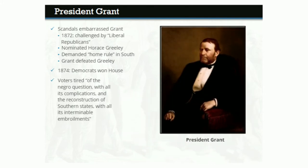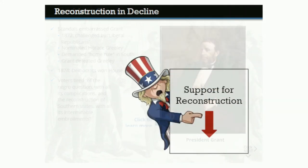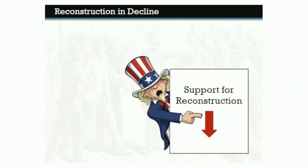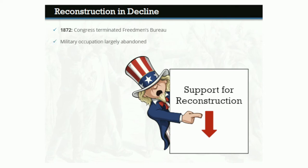Reconstruction had become unpopular, and so it seemed had Grant's Republican Party. Support for Reconstruction continued to decline. By the 1870s, the Freedmen's Bureau had lost most of its funding and staff, and in 1872 Congress terminated the agency for good. Military occupation was also largely abandoned. After the Civil War, more than 20,000 soldiers were stationed in the South to keep the peace. By 1870, the number was less than 7,000; by 1876, it was about 3,000.